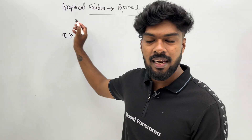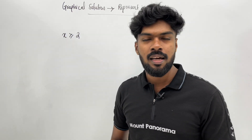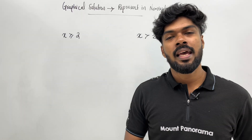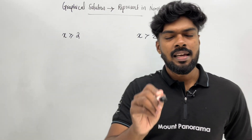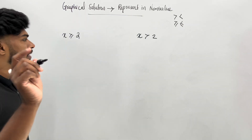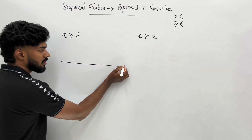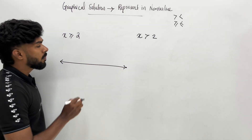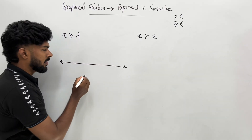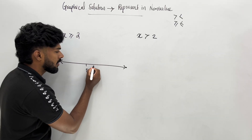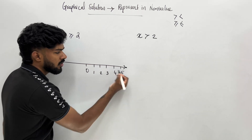Now we have to get the solution. x is equal to 10, x is equal to 5, x is equal to 12. Here we have to get the solution — if you want to get the solution, you can get it. Now we have to represent the solution. This x is equal to 2. The number line shows: 0, 1, 2, 3, 4, 5.